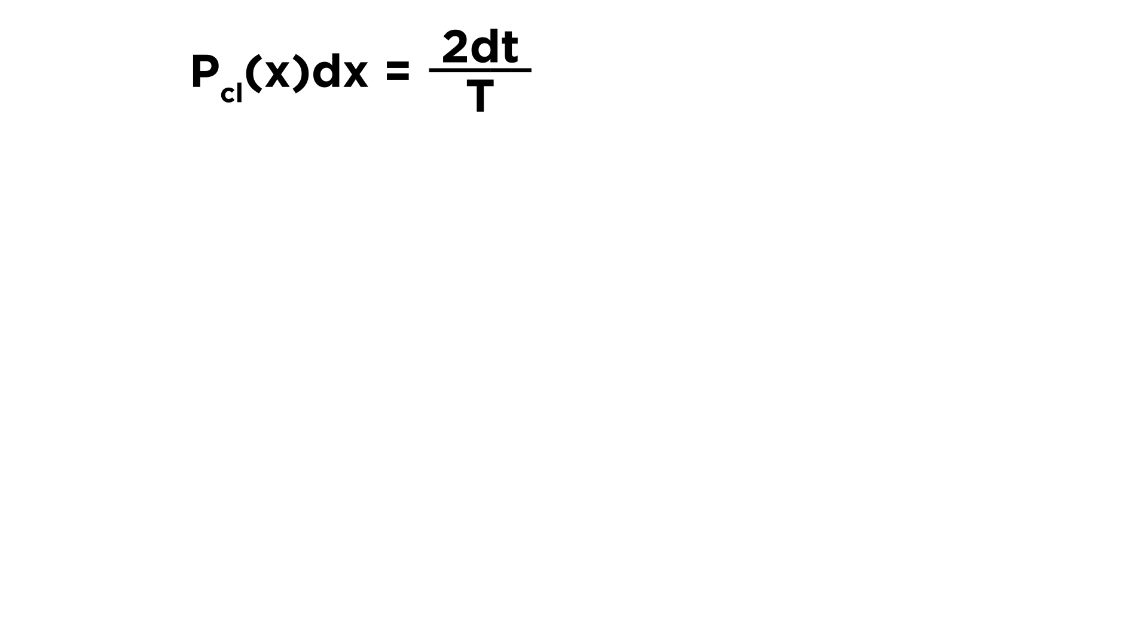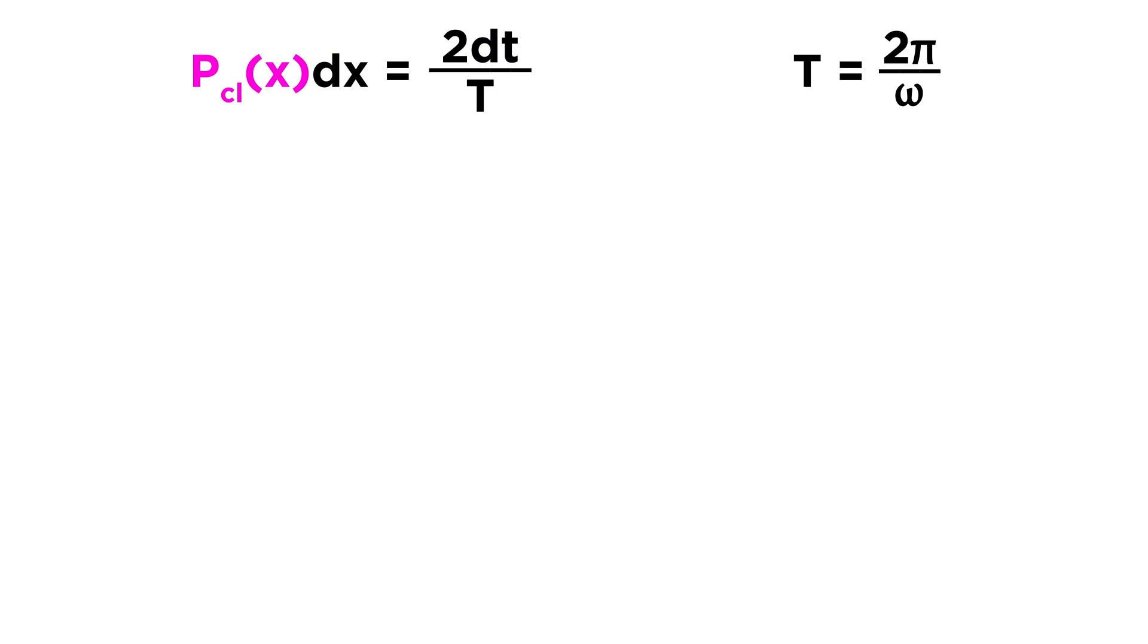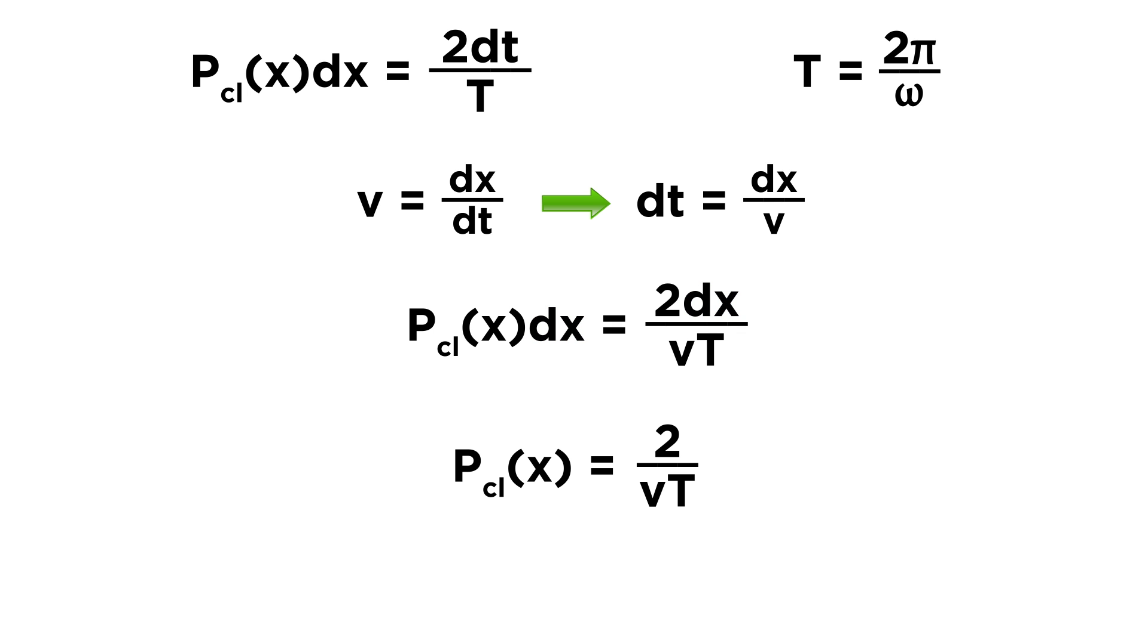So mathematically, that all reads like this, as being equal to 2 dt over t, where t represents the period. Recall that the period is defined as 2 pi over omega. We can understand this as the fraction of time, dt, of one period, t, that the particle spends in the dx interval. Remember that we are calculating PCl of x, so now we want to work through the right side of the equation. First notice that v equals dx over dt, so we can rearrange this a bit and say that dt equals dx over v. Let's plug this expression in for dt, and we will see that we have dx on both sides, so we can get rid of those, and PCl of x will equal 2 over vt.